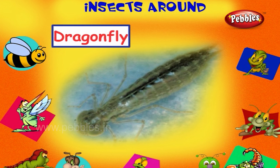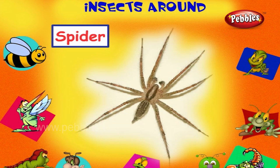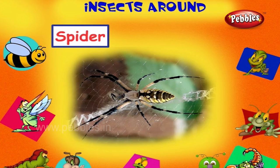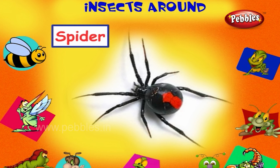This is a spider. It is small in size. It eats small insects. They build web to catch insects. Some spiders are poisonous.